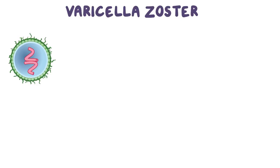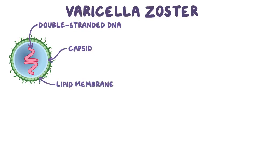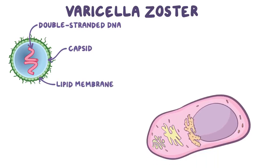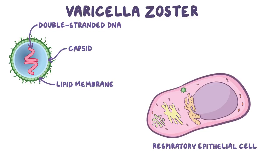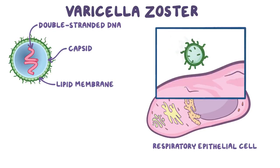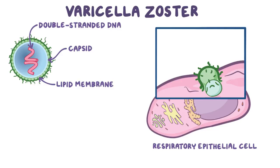Varicella zoster virus is a double-stranded DNA virus protected by a protein coat called a capsid, which is enveloped by a lipid membrane. The virus initially enters respiratory epithelial cells but eventually spreads to numerous cell types. It gets into these cells by fusing its membrane with the cell membrane and releasing the capsid inside the cell. The capsid then binds to the nucleus and injects it with viral DNA, where it's copied.